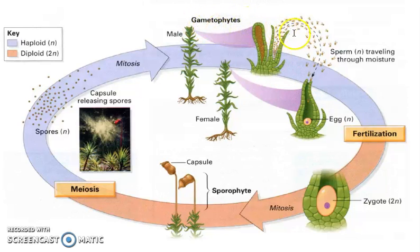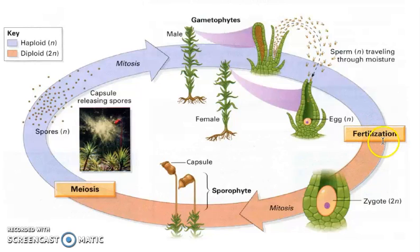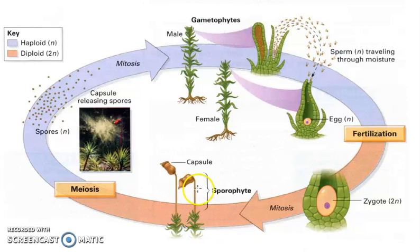As the sperm swim over to the female egg, which is at the very top of the female moss, it will fertilize the egg. That first cell, as we know, will be called a zygote. It will go through mitosis, and then out of the very top of the female will grow this thing called a capsule.